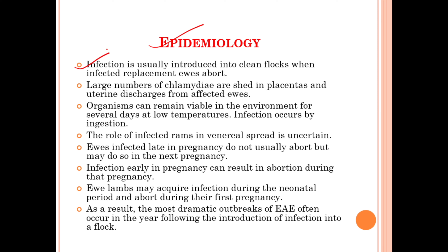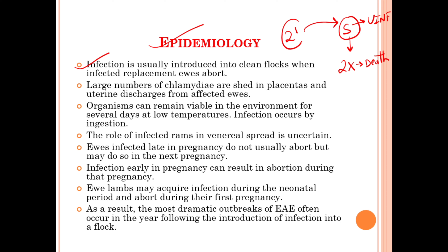The infection is introduced into clean flocks when infected replacement ewes abort. To maintain flock numbers, new sheep are introduced, and these new animals may carry Chlamydophila abortus bacteria, aborting in a subsequent pregnancy and thereby introducing the infection into a previously uninfected flock.